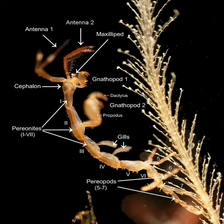Morphology is a branch of biology dealing with the study of the form and structure of organisms and their specific structural features. This includes aspects of the outward appearance, i.e. external morphology, as well as the form and structure of the internal parts like bones and organs, i.e. internal morphology.